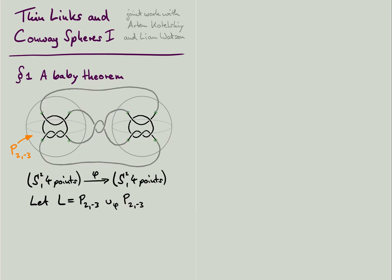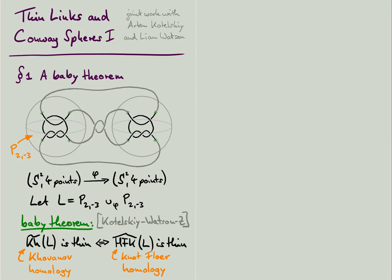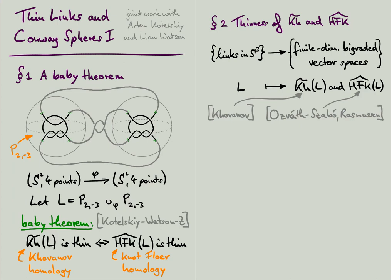But no matter how you glue the tangles together, the resulting link L satisfies the following property. The reduced Khovanov homology of the link L is thin if and only if the knot-Floer homology of L is thin.